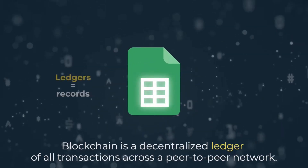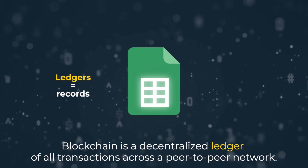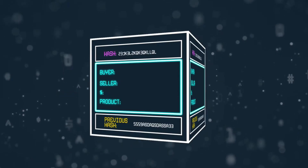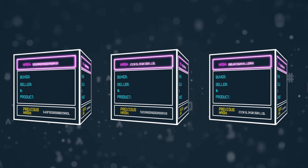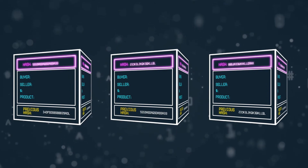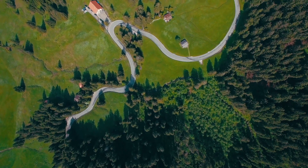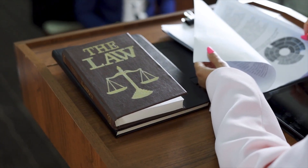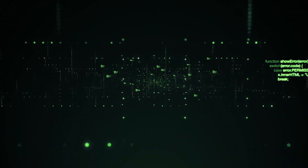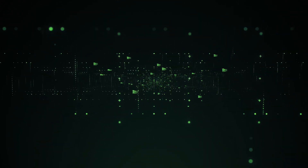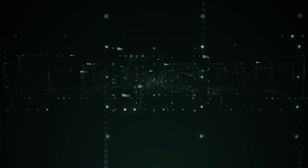Blockchain is a shared immutable ledger that facilitates the process of recording transactions and tracking assets in a business network. An asset can be tangible like a house, car, cash, or land, or intangible like intellectual property, patents, copyrights, or branding. Virtually anything of value can be tracked and traded on the blockchain network, reducing risk and cutting costs for all involved.